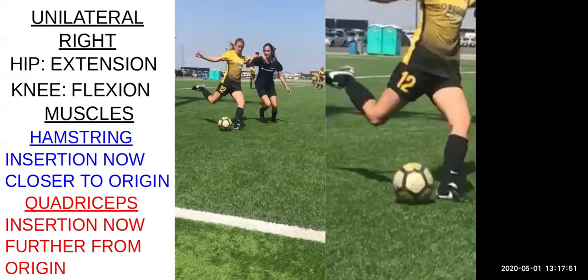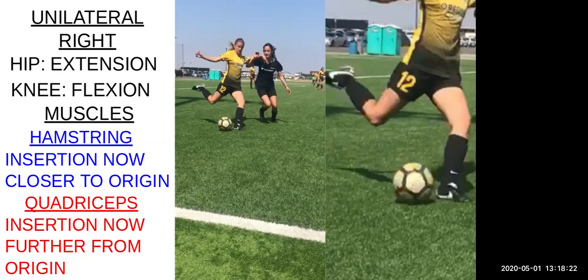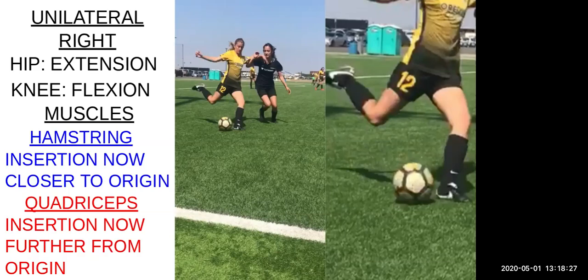The quadricep insertion — the tibial tuberosity — is now further from the origin in the pelvis area, specifically the anterior superior iliac spine and other associated bony landmarks, because the quadricep is a muscle that crosses two joints. The hamstring has created more knee flexion, so the quadricep origin and insertion are now further apart compared to before.